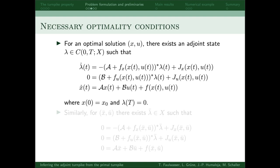Now that we got the turnpike property also mathematically introduced, we move on to the necessary optimality conditions and the adjoint state. As we have assumed that the pair x u is an optimal solution of the OCP, there necessarily exists an adjoint state lambda, which has this dynamics with a constraint.